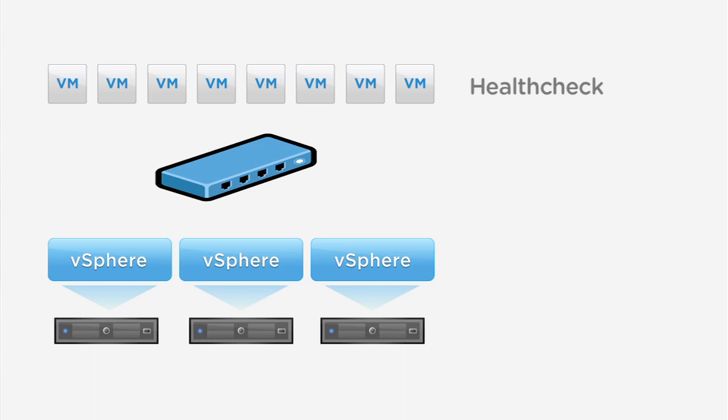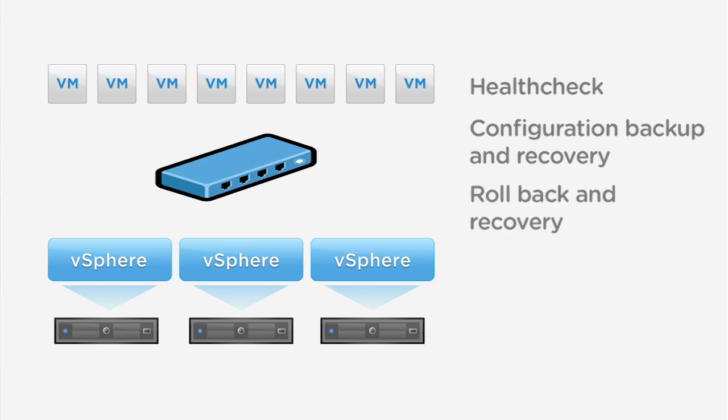In addition to that, we will also offer a configuration backup and recovery capability. If your configuration were ever to fail, you could go ahead and recover that configuration very quickly and easily. You could also use that configuration as a template for deploying new networks out into your environment. We'll also offer a rollback technology for patching the distributed switch that would enable you to go back to a good known setting should you have some type of issue as you move forward.